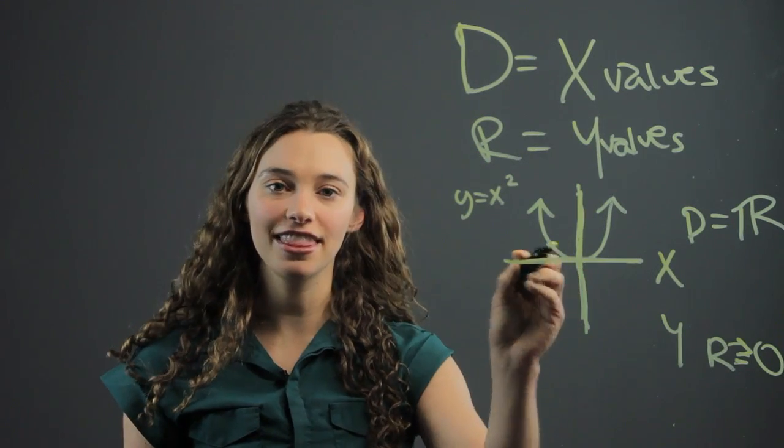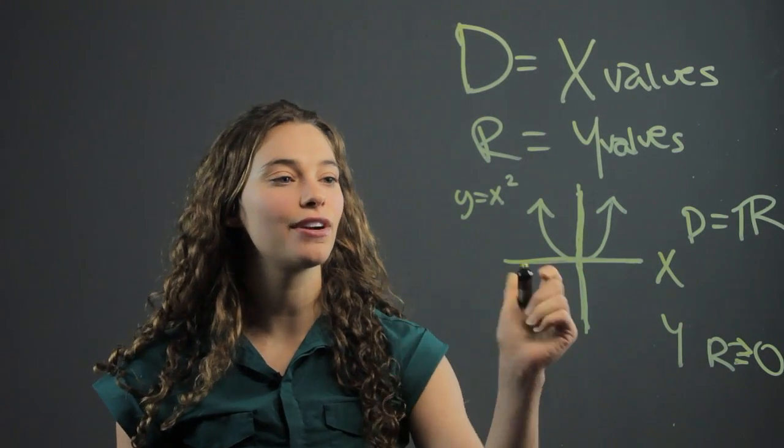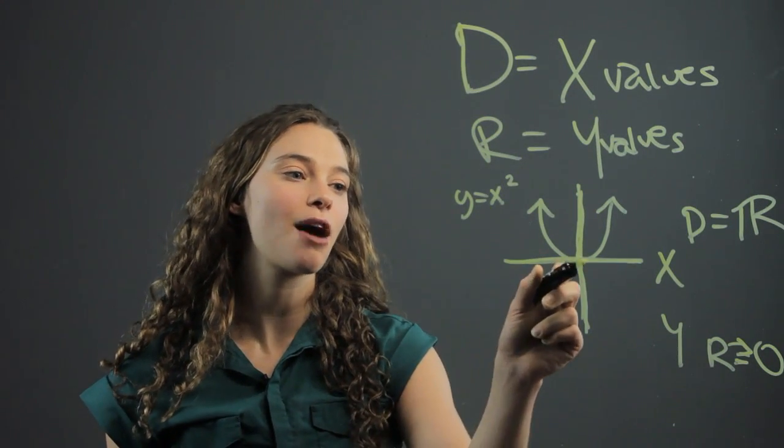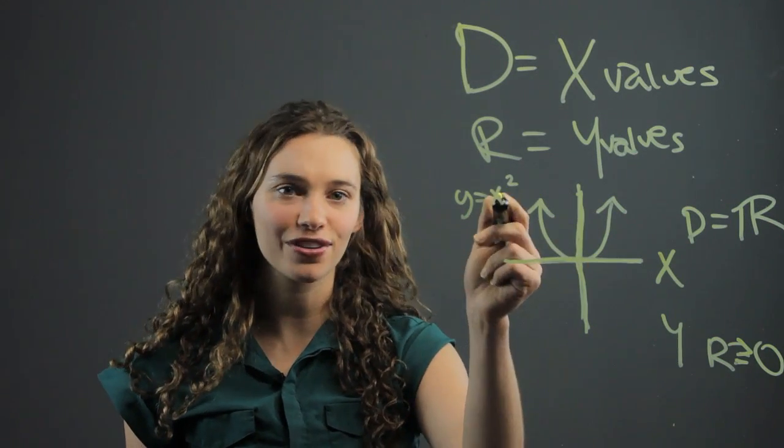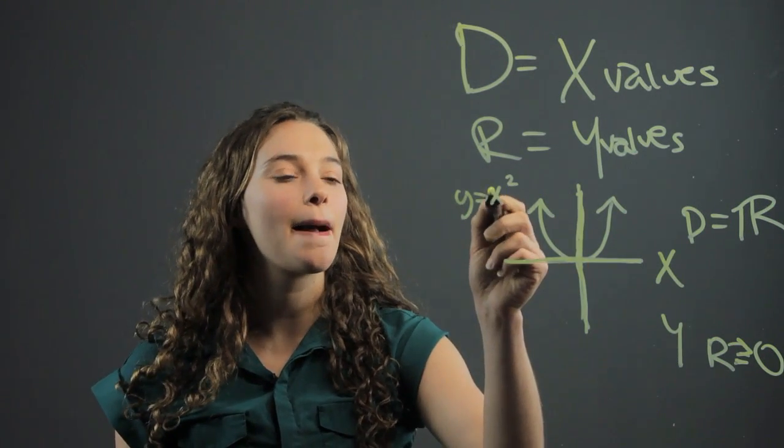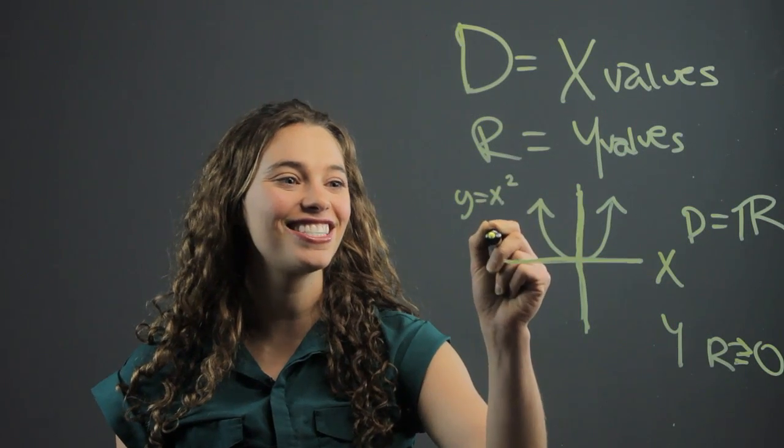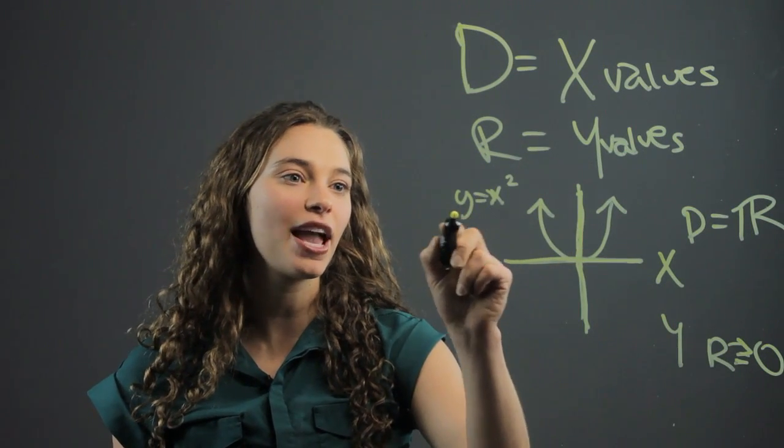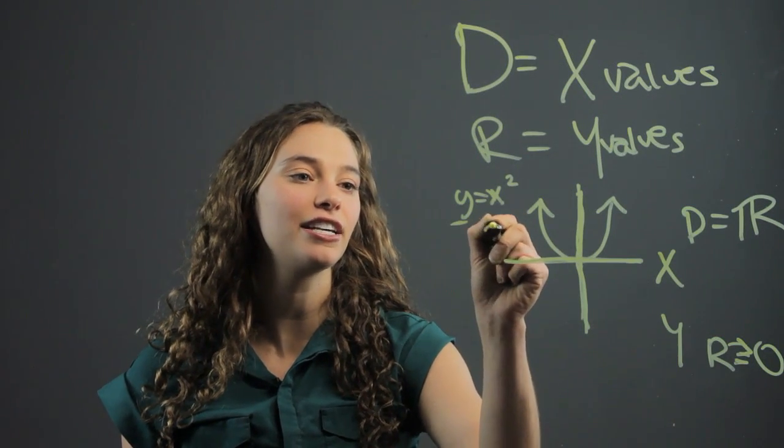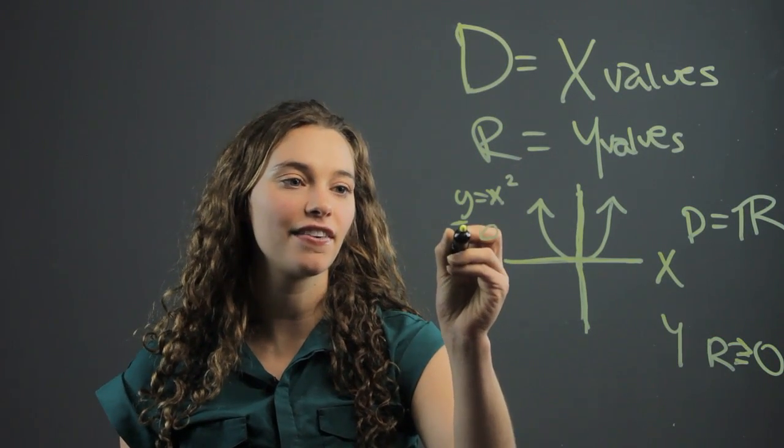So, you can do that by looking at the graph, but you can also do it by solving the problem algebraically. You know, for something as simple as this, or you should know if you're in calculus, that x squared is never going to be negative. So, the range, the y values, are always going to be greater than or equal to zero.